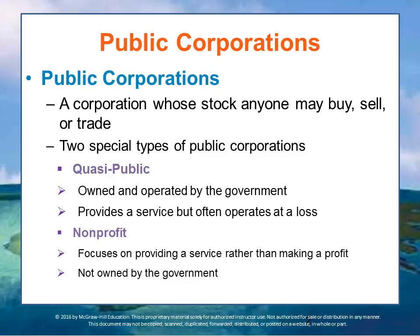There are two special types of public corporations in addition to the large-scale public corporation that we generally talk about. These two other types are the quasi-public corporation and the nonprofit corporation. The quasi-public corporation is owned and operated by the federal, state, or local government, and its focus is usually to provide a service to citizens, such as the US Postal Service.